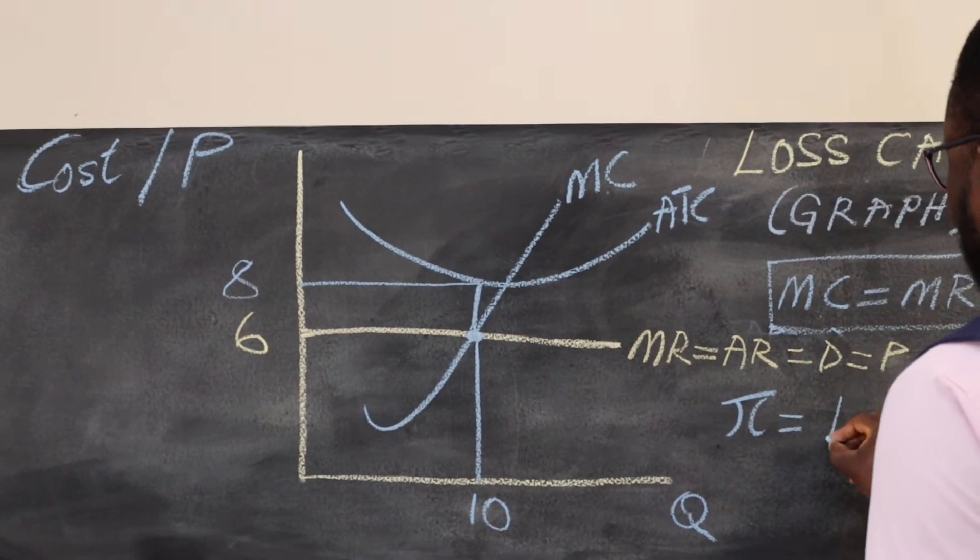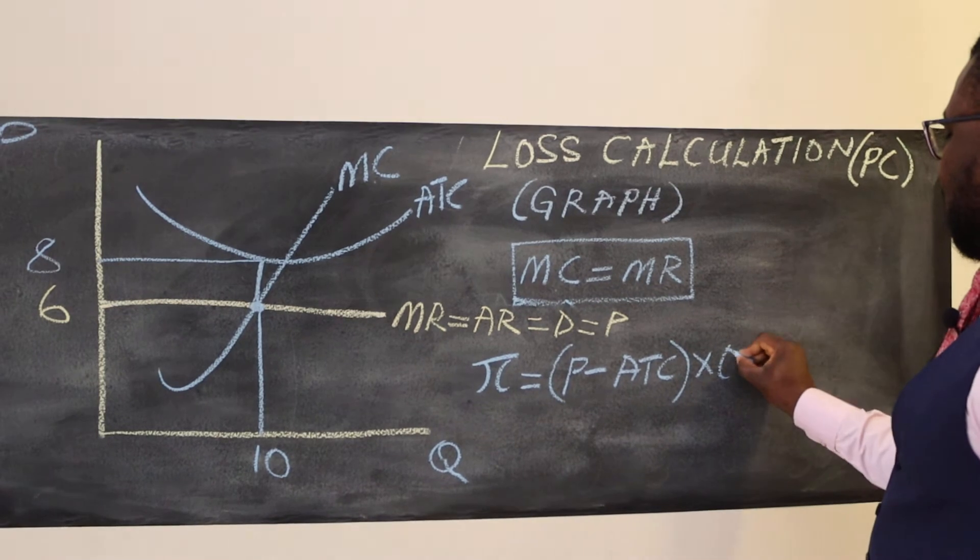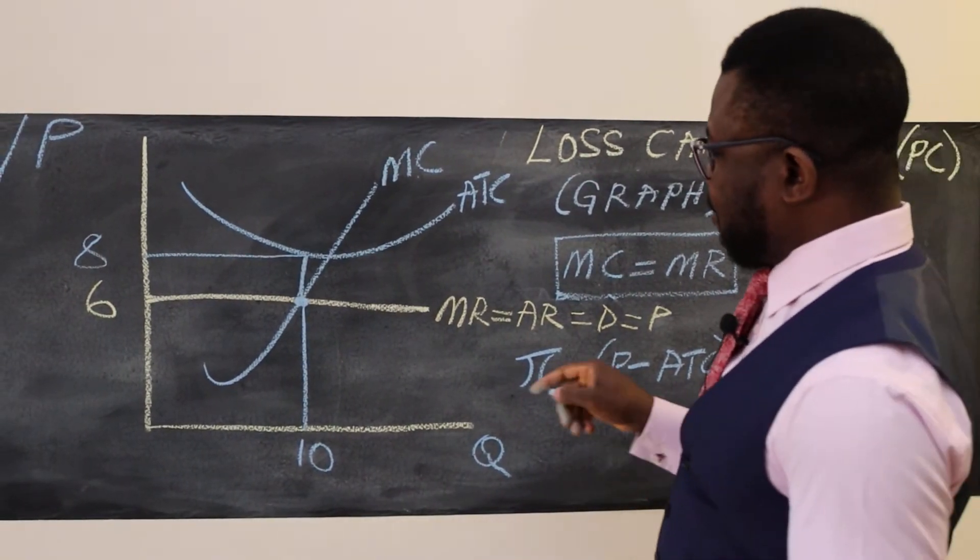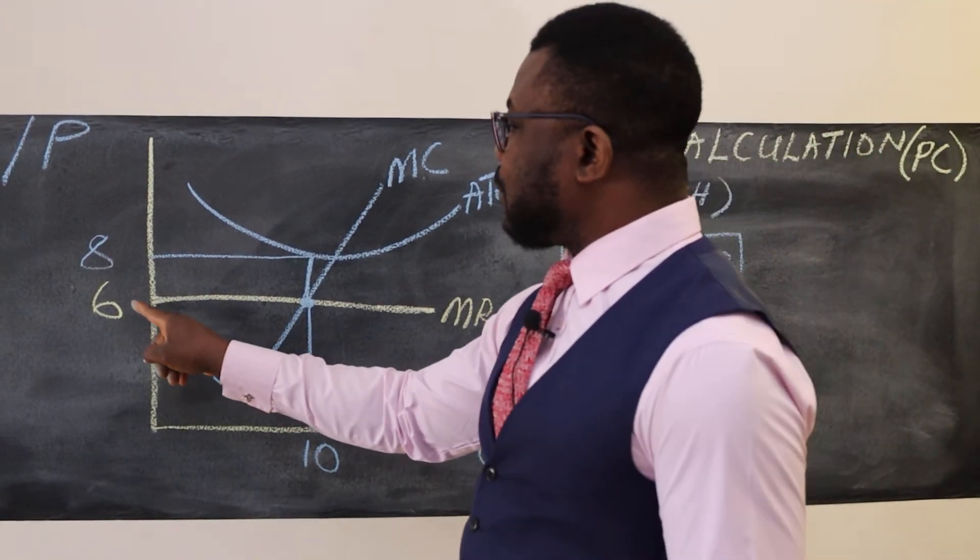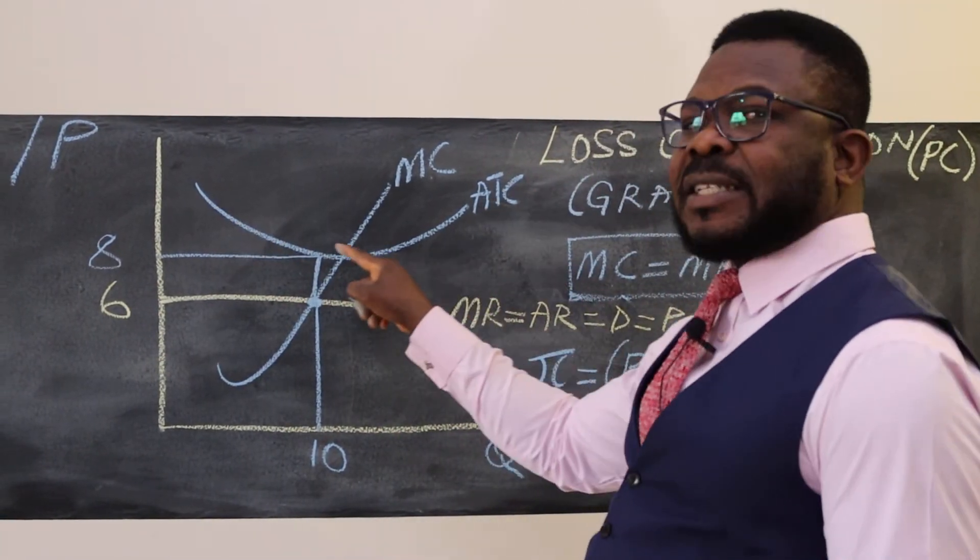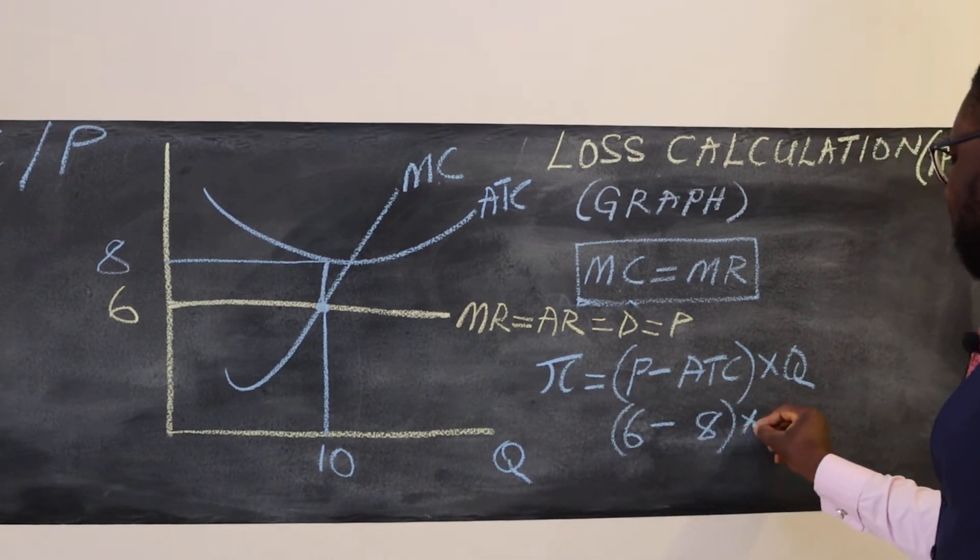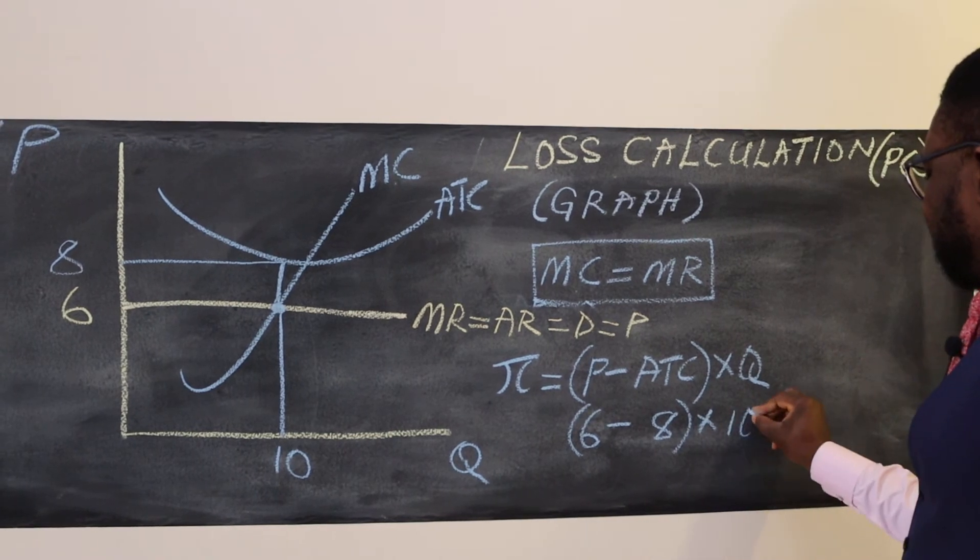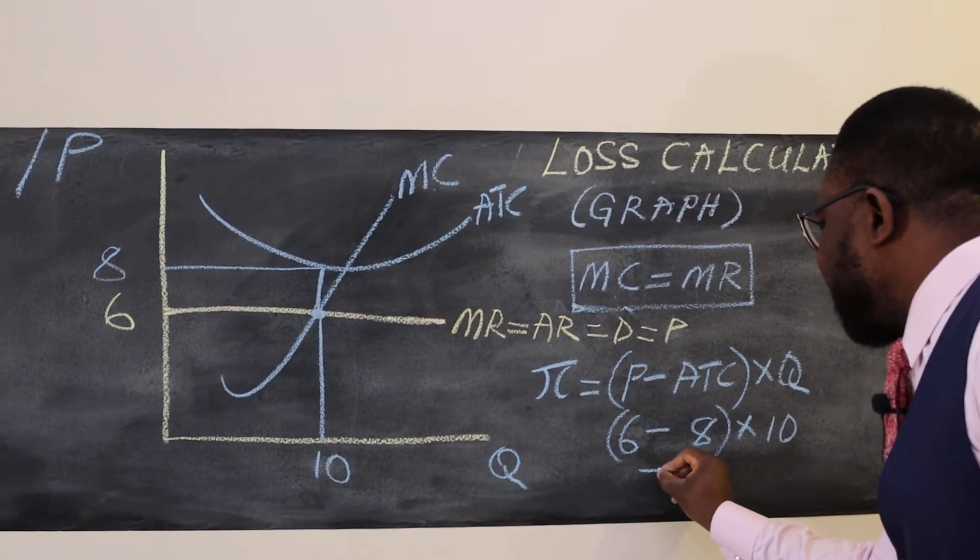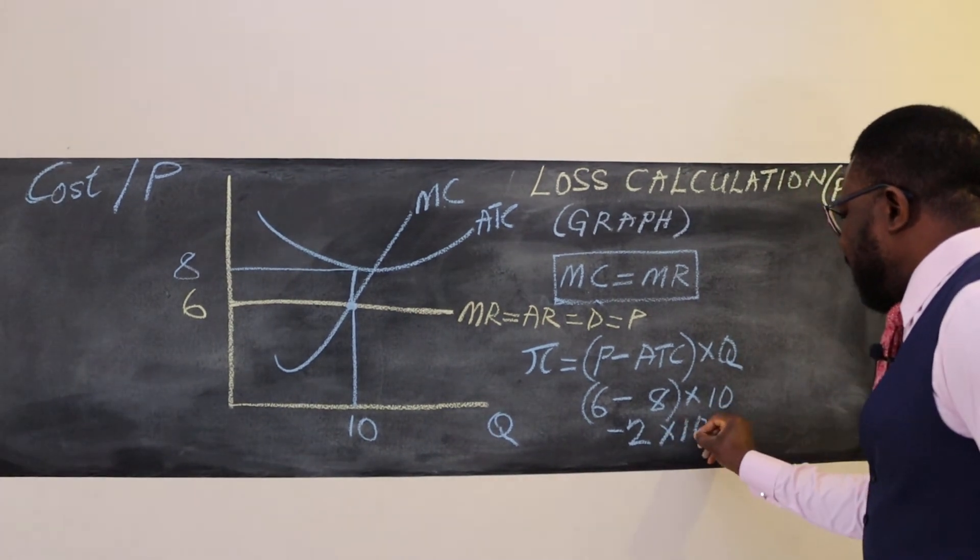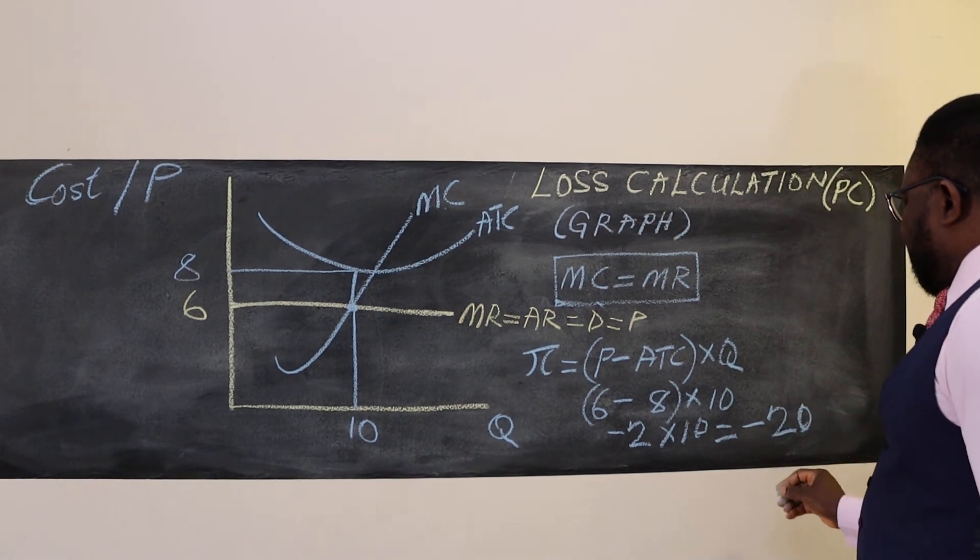ATC is higher - average total cost is eight, so we put eight here. Times what's the quantity? Quantity is ten. So six minus eight - we have a problem. Six minus eight is minus two, times ten, so we are making a loss of twenty dollars or pounds or whatever currency.